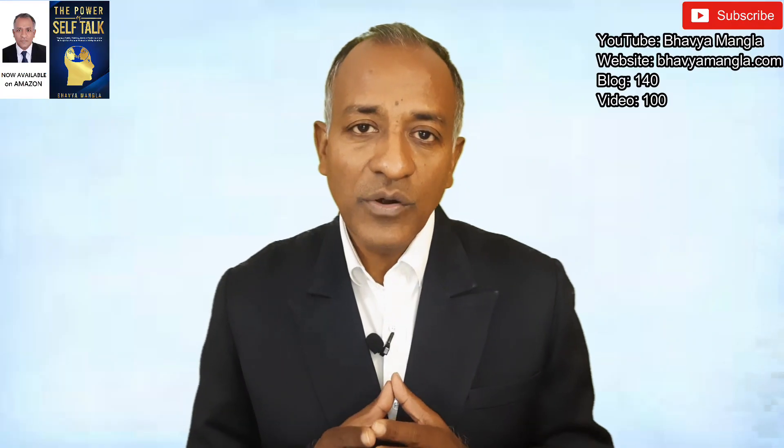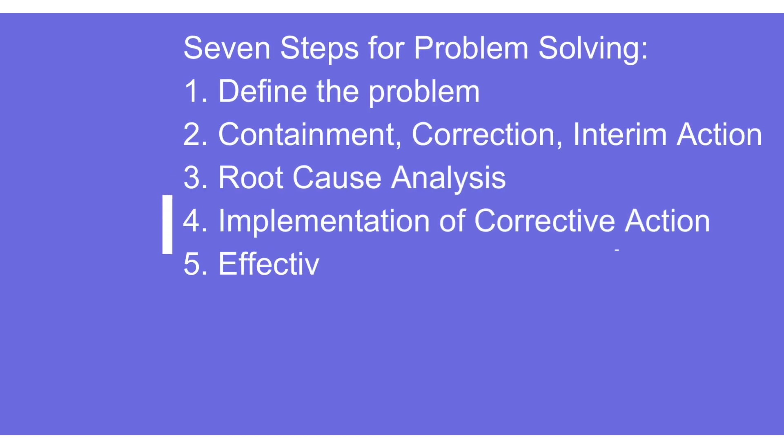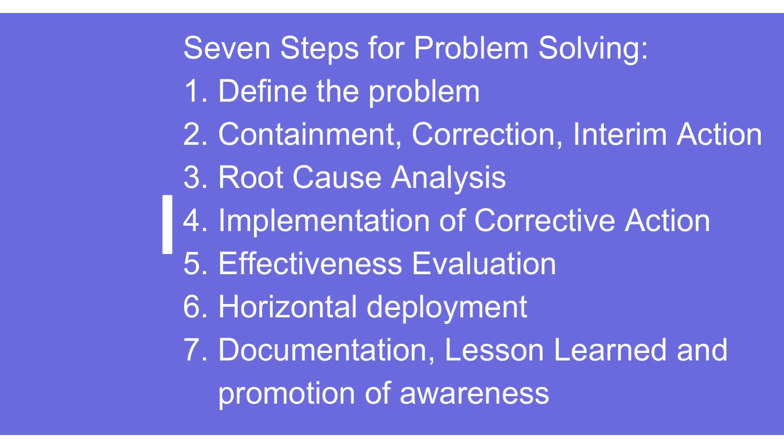To summarize the seven steps: step one is defining the problem; step two is containment, correction and interim action; step three is root cause analysis; step four is implementation of corrective action; step five is effectiveness evaluation; step six is horizontal deployment; and step seven, the last and most important, is documentation, lesson learned, and promotion of awareness.